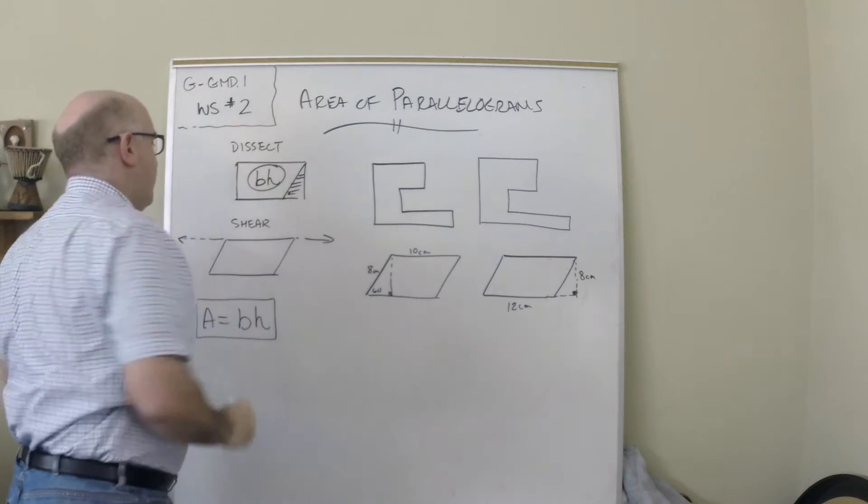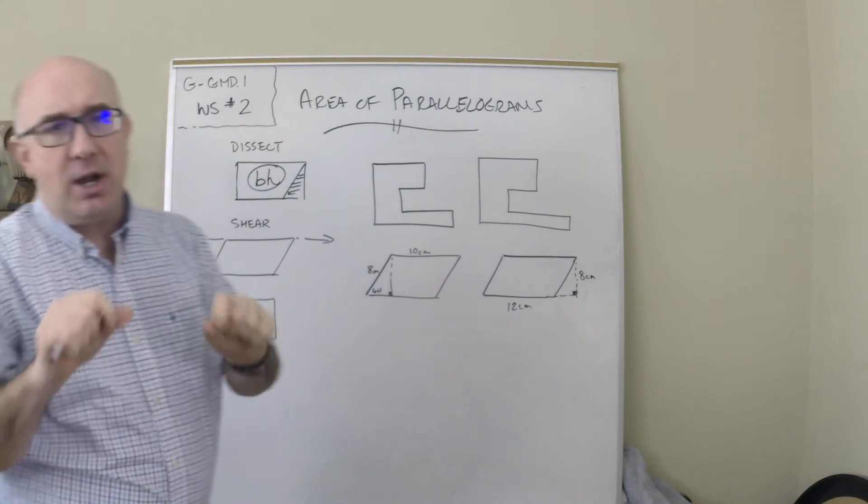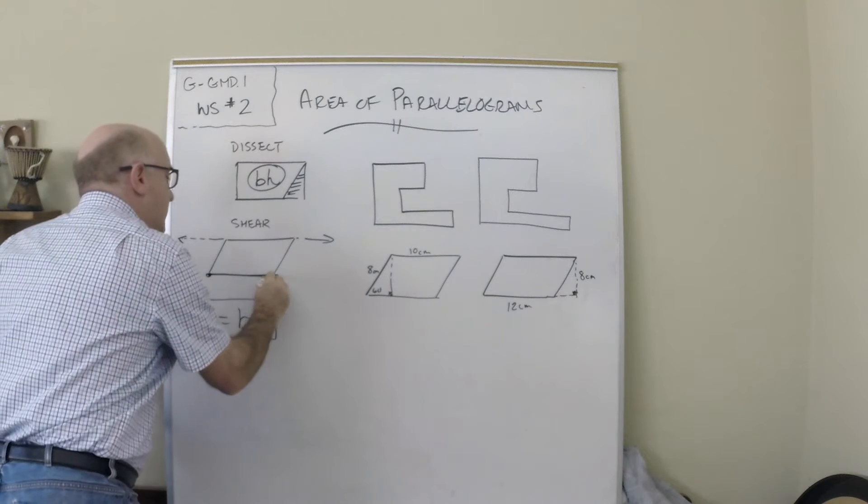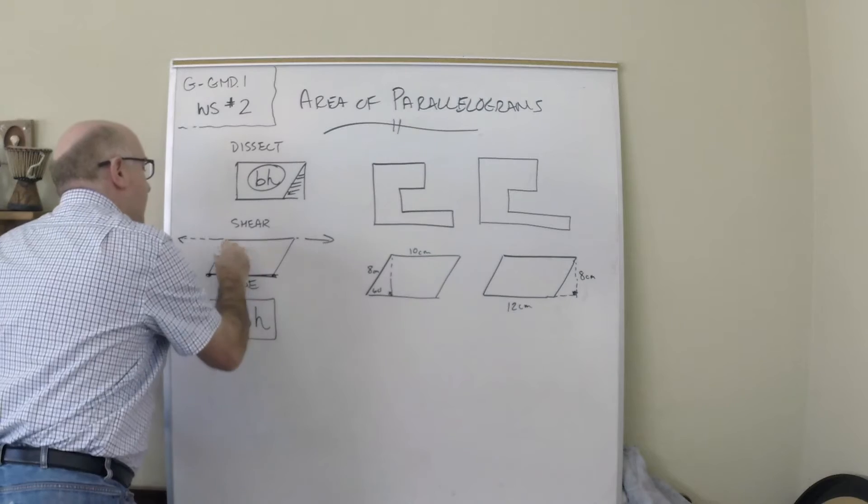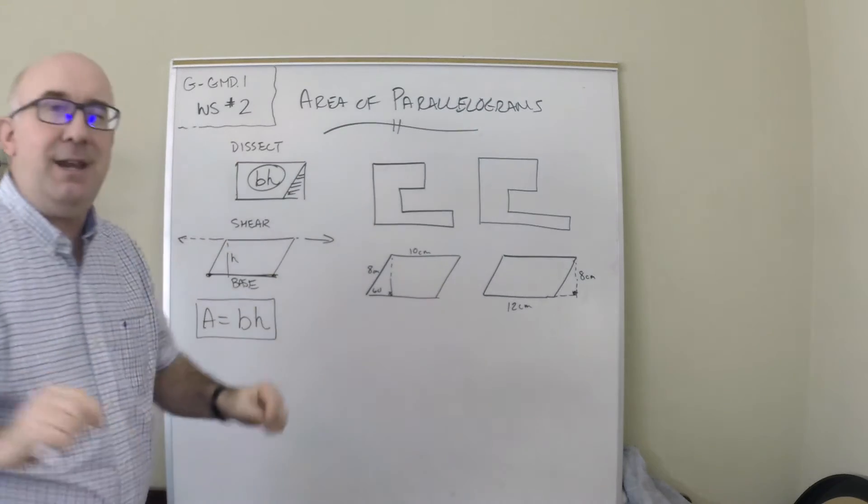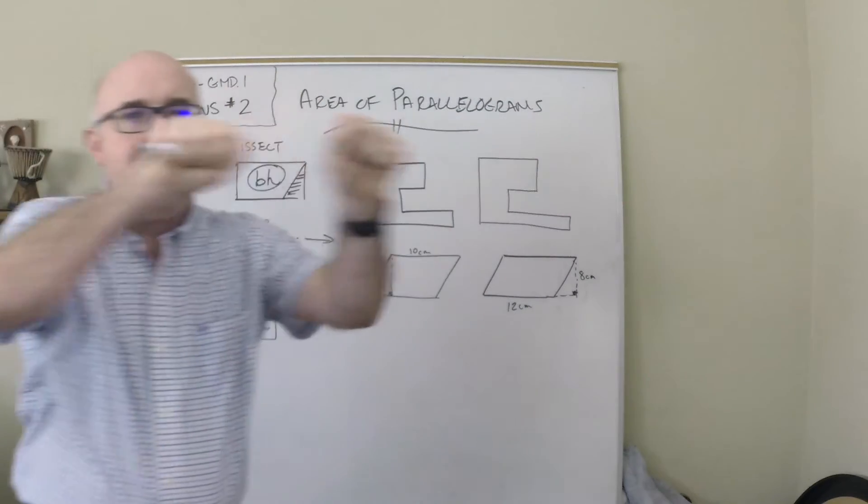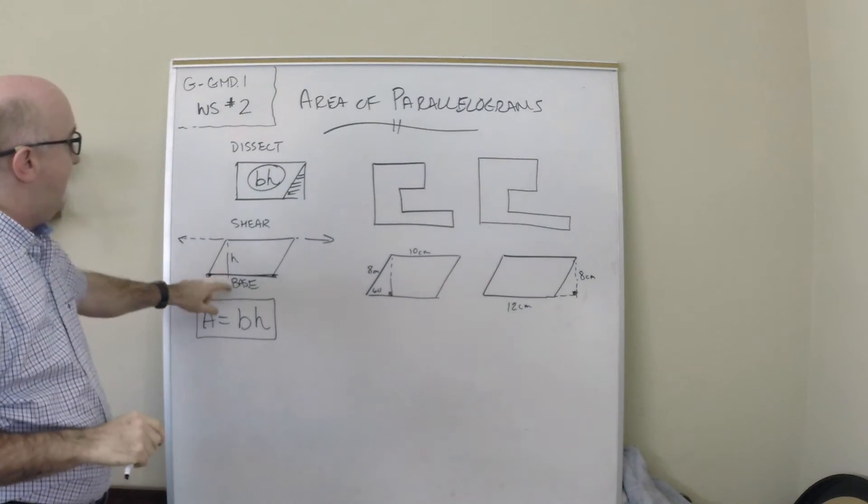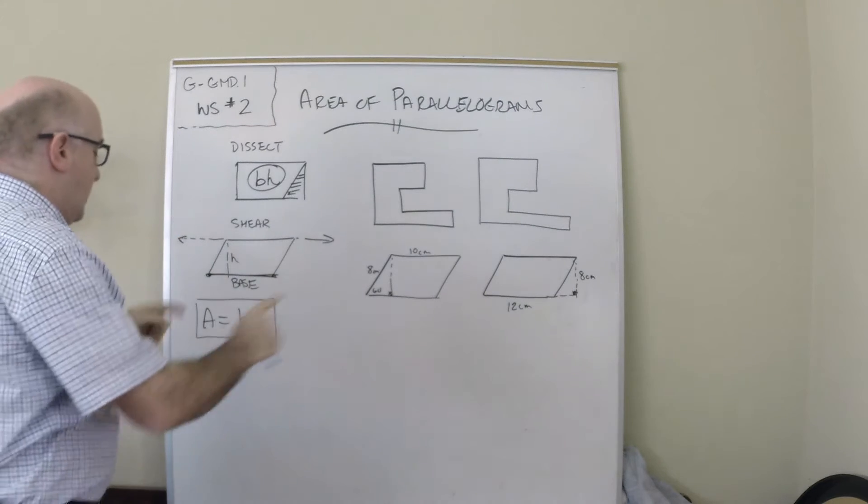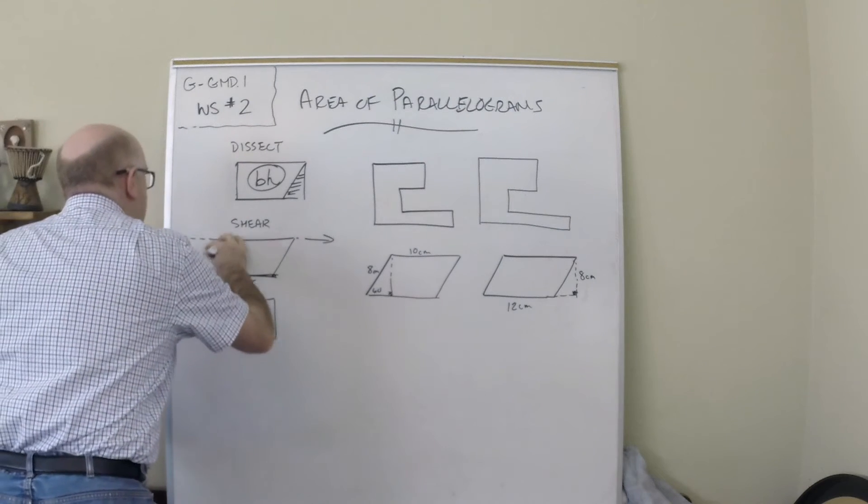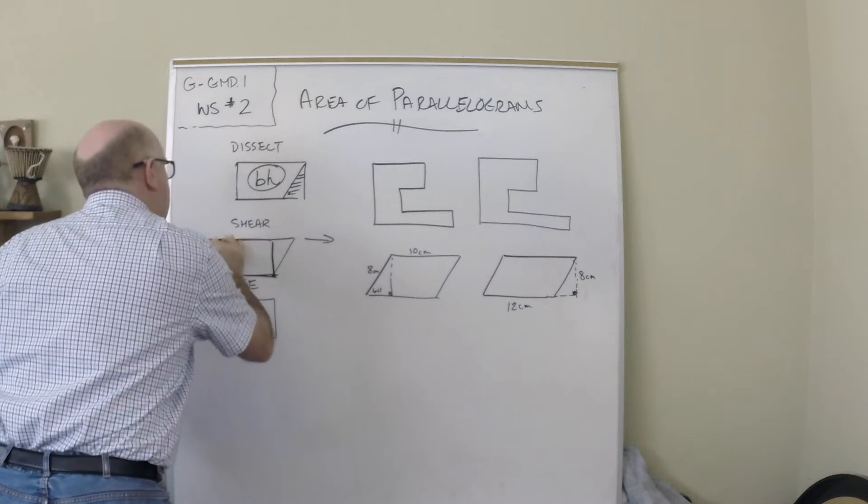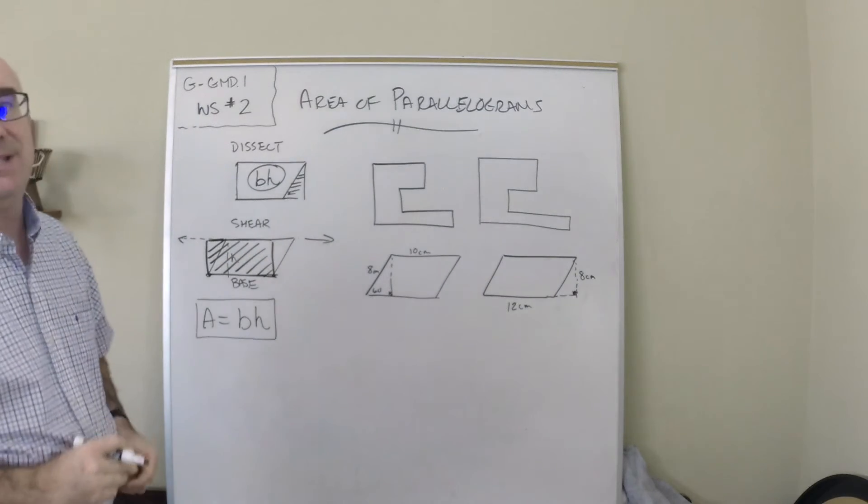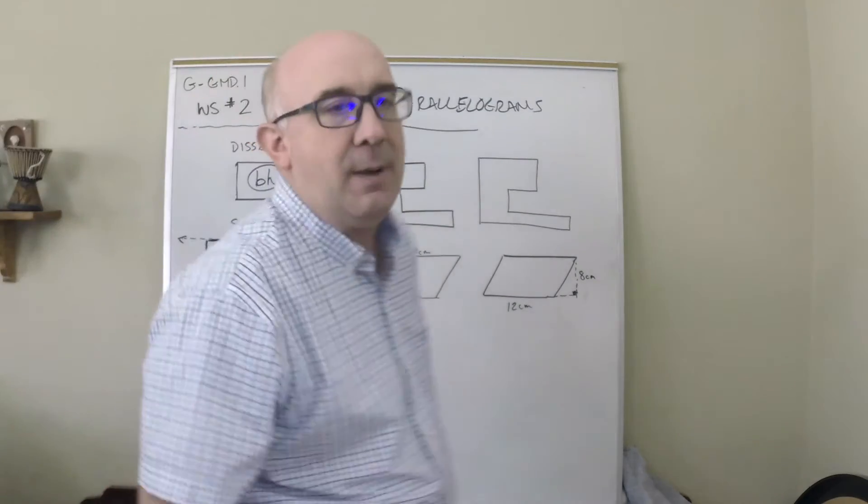It's the same base and the same height, so it's just base times height. Shearing means to lock in one dimension. We're going to lock in this base right here, and the height stays the same because if you shear along a parallel line no height changes take place. So we get base times height, and we can shear it so that we are perfectly perpendicular above this, giving us that idea of base times height.